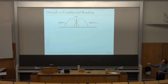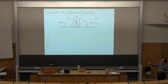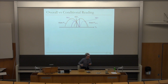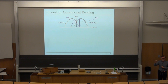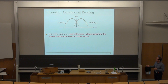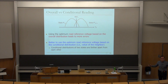Using the optimum re-reference voltage based on the overall distribution leads to more errors. It is better to use the optimum re-reference voltage based on the conditional distribution — i.e., the value of the neighbor — because the conditional distributions of the two states are farther apart from each other than the overall distributions. We verified this with real data from a real chip. The conditional distributions show a much larger margin, and the bit error rate is an order of magnitude lower.